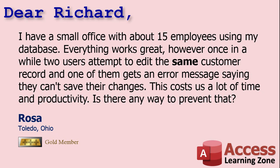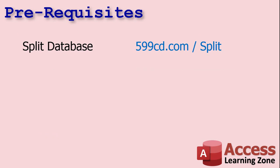Yes, of course, Rosa, there is. We're going to activate something called record level locking. This is where, when you edit a record, it locks it so no one else in the database can edit that specific record. Let me show you how to turn it on. This video assumes you know how to properly split a database and that you're using a database on a network with multiple users. If you don't know what I'm talking about, go watch my split database video.